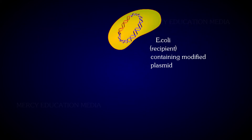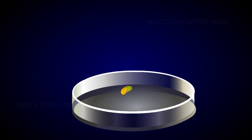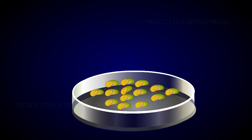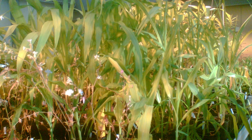Altering the genome of an organism by introducing genes of interest is known as gene manipulation or recombinant DNA technology. As this mechanism has the ability to engineer new organisms, it is known as genetic engineering.